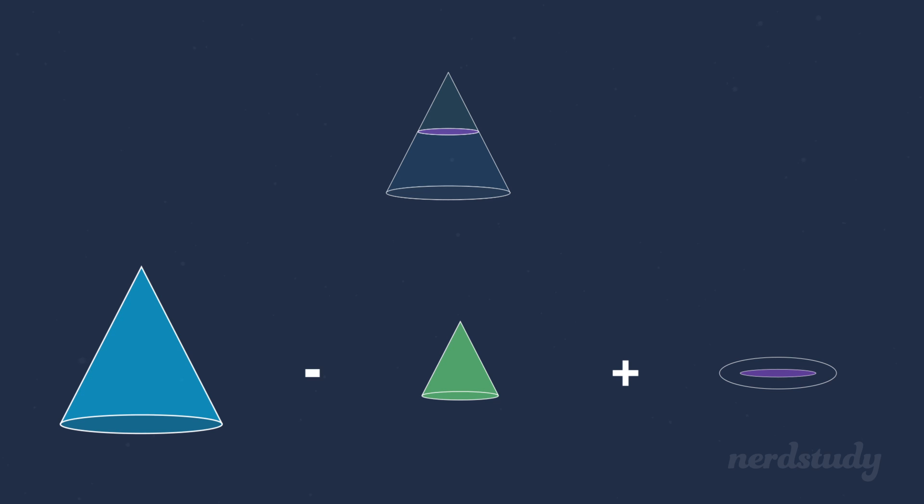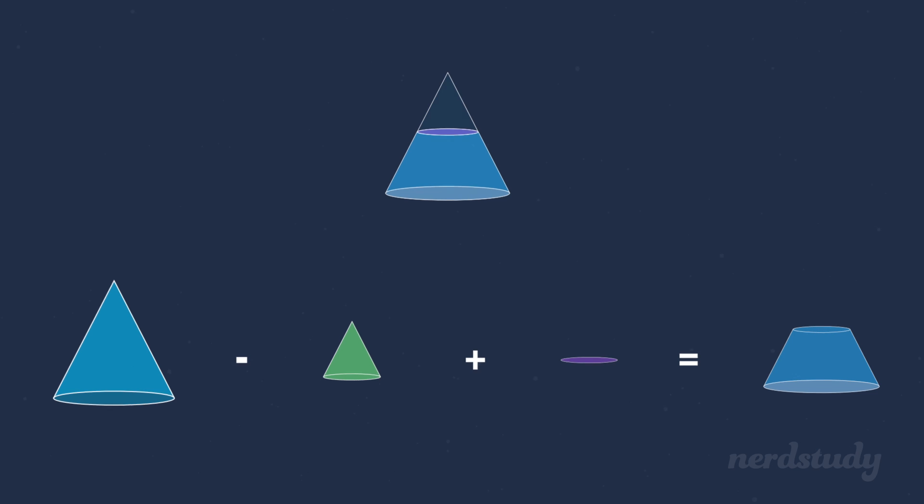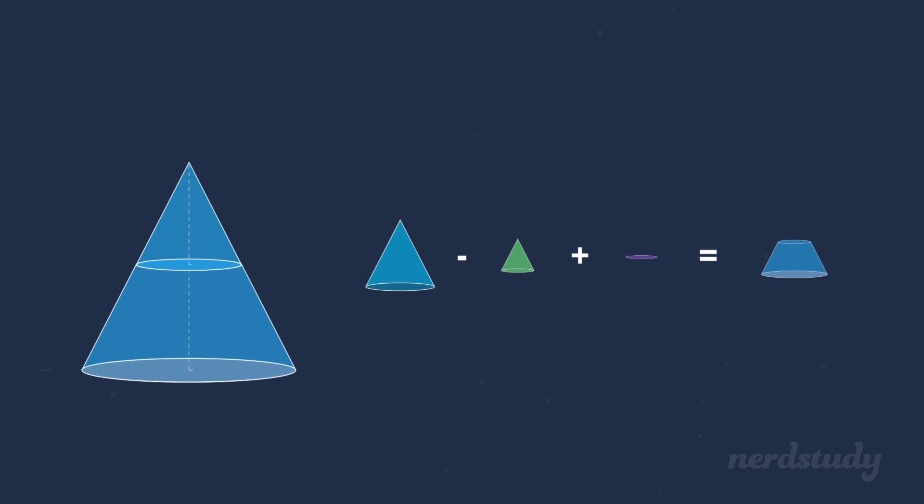This area here can be seen as the base area for the small cone. And as a result, we find out what the surface area of this part is, which was our original objective. So we've effectively created a general formula for ourselves to find the total area of this section here. So how do we find the total surface area of the entire cone?